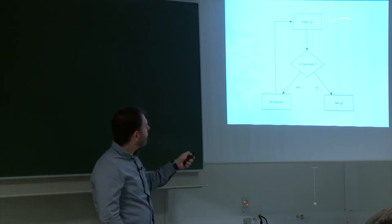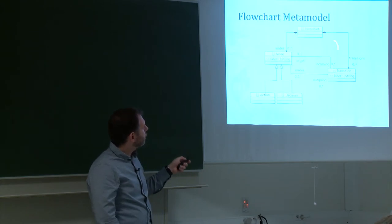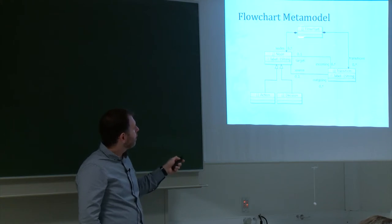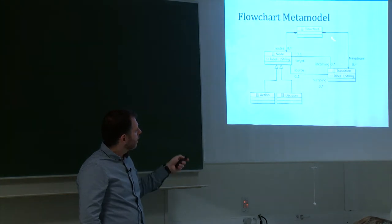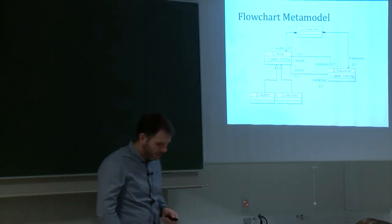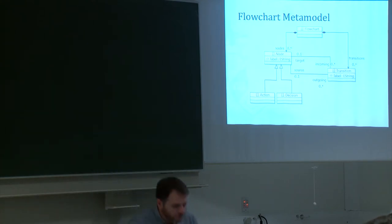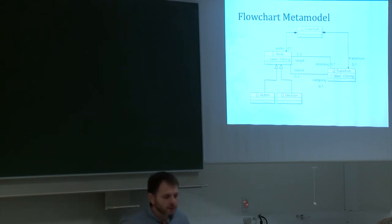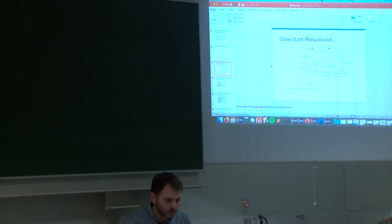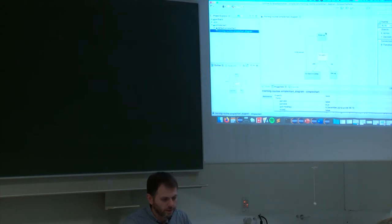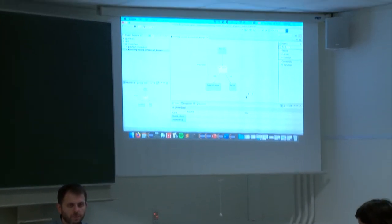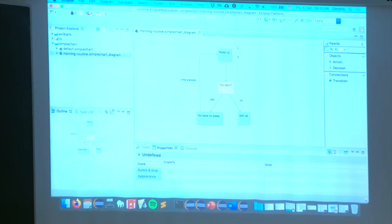This model conforms to a simplified version of the flowchart metamodel we developed over the last few days. We have a flowchart that contains nodes — actions or decisions — and transitions between them. Instead of showing you EOL syntax on slides, I'll do a quick live demo and walk through the different features using live examples. Here I have a small model conforming to my simplified flowchart language, which I call 'simplechart'. This is a GMF editor, and this file only keeps the layout information — my real model lives in the .simplechart file.